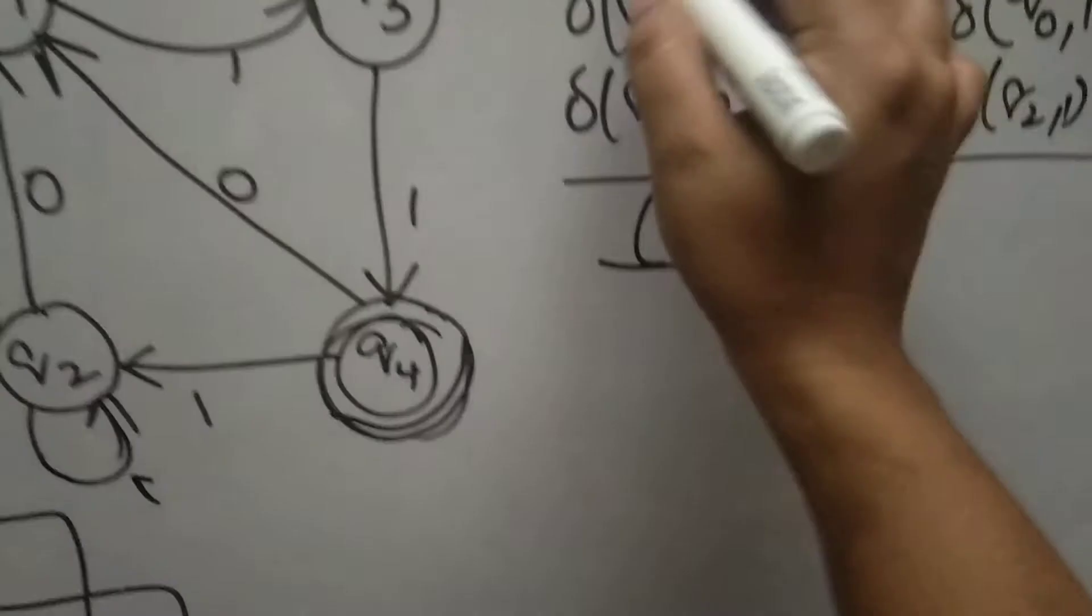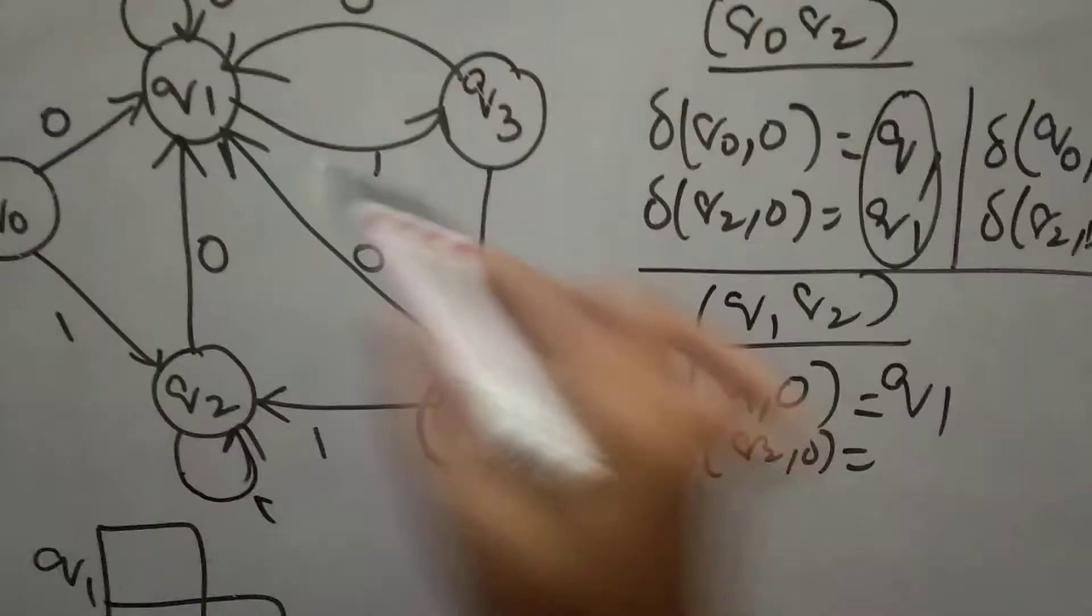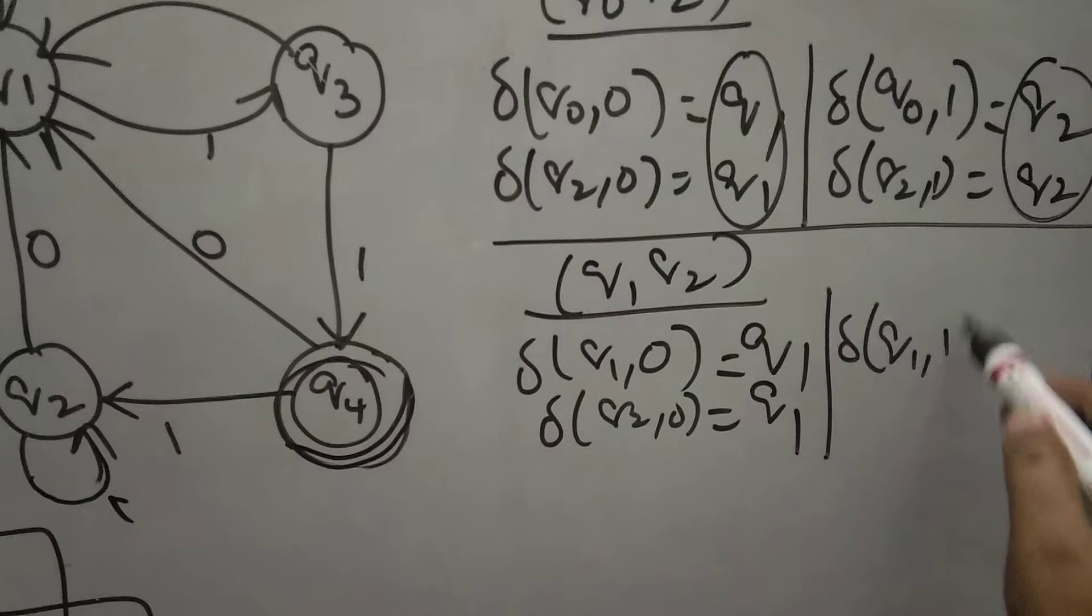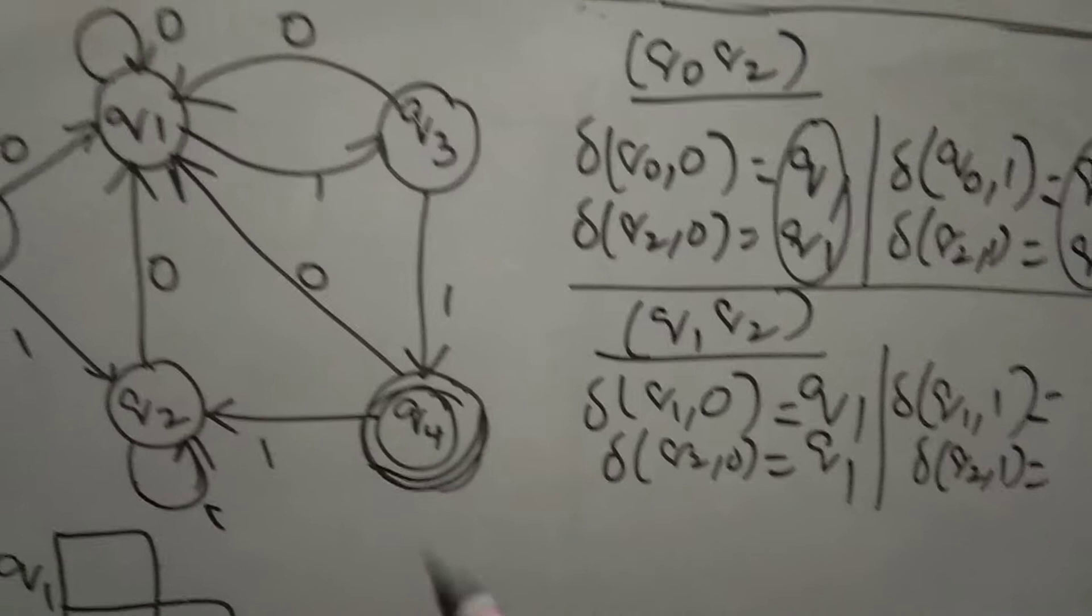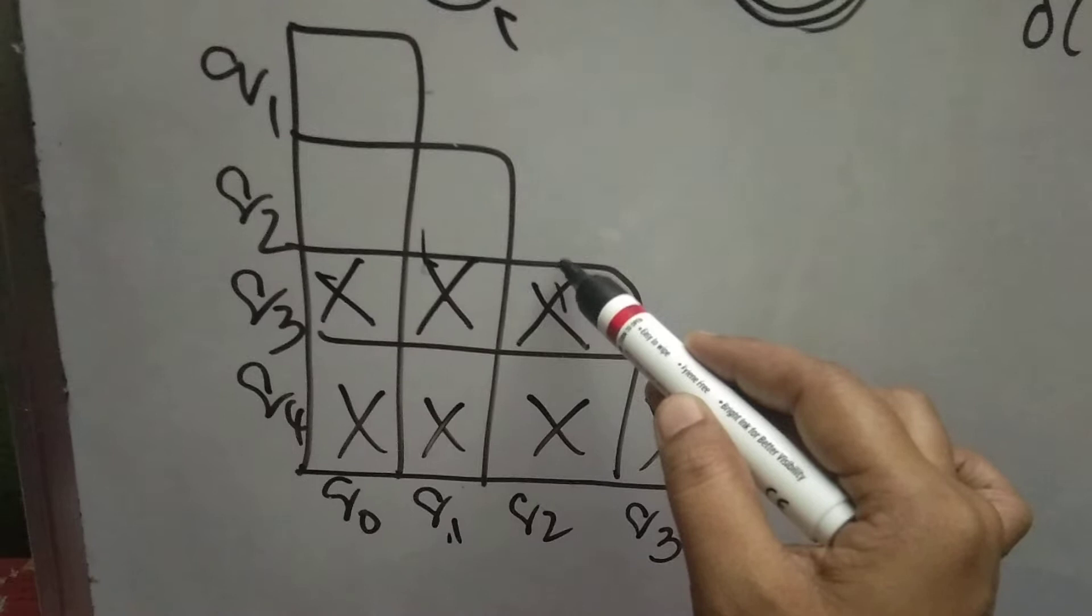Go for Q1, Q2. Q1 upon 0, Q2 upon 0, which is Q1. Q2 upon 0 is Q1. We cannot mark it. Go for Q1 upon 1, Q2 upon 1. Q1 upon 1 is Q3. Q2 upon 1 is Q2. Check whether Q2, Q3 is marked or not. Q2, Q3 is marked, so we can also mark Q1, Q2.